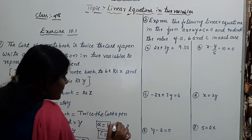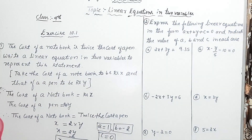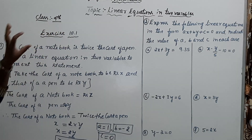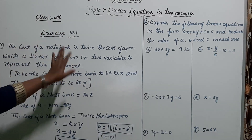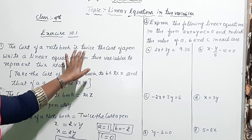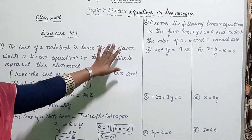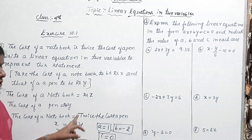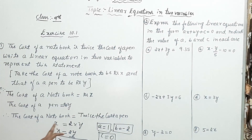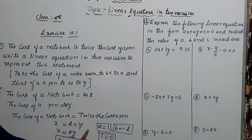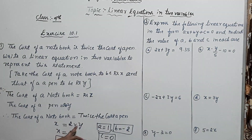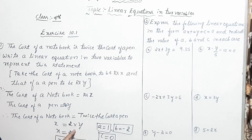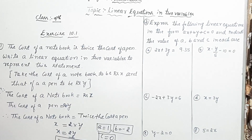To repeat once again: the cost of a notebook is greater compared to the pen, so x = 2y. Shifting 2y to the left-hand side gives x minus 2y = 0.